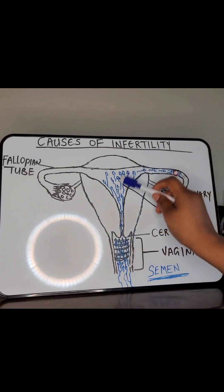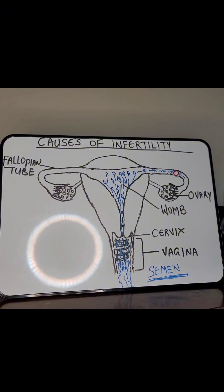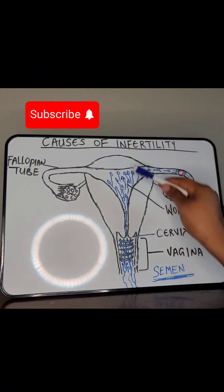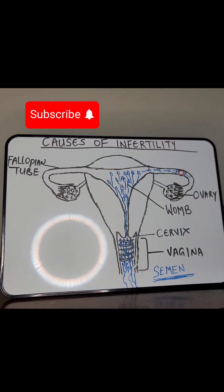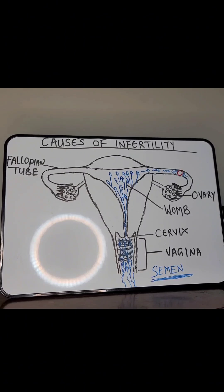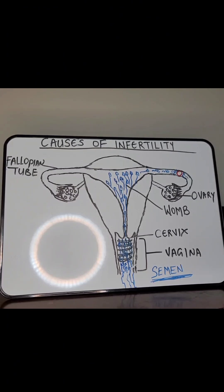Let's go through some things that negatively affect sperm cells. First, alcohol and smoking — I know some of you will say you know a man who drinks and smokes heavily but has many children. Our bodies are not the same, so if you want to boost your sperm health, stay away from excessive drinking and smoking. Another factor is unhealthy diets — too much sugar and processed food. Also, high temperature reduces sperm production. Stop wearing tight underwear and allow air circulation — if it is always hot down there, sperm production will be affected.